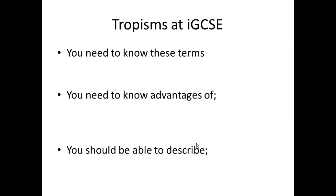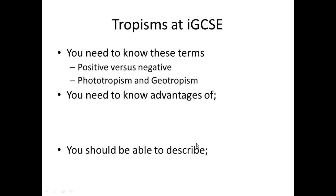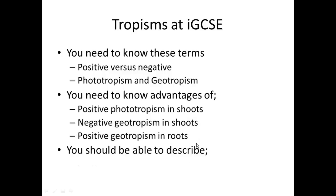These are our learning outcomes for this topic and this video. You need to know these terms — positive versus negative — and you need to know phototropism versus geotropism. You need to know the advantages of positive phototropisms in shoots, negative geotropisms in shoots, and positive geotropisms in roots. You should also be able to describe how auxin causes positive phototropism to occur.